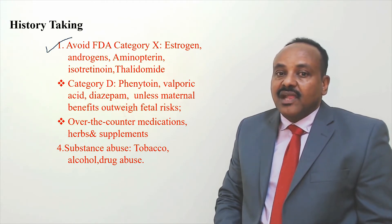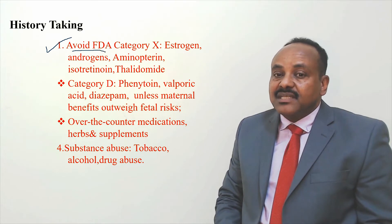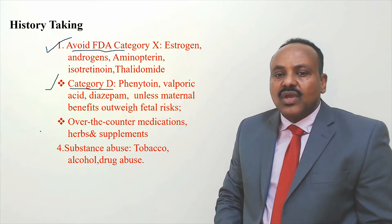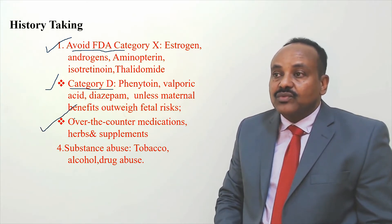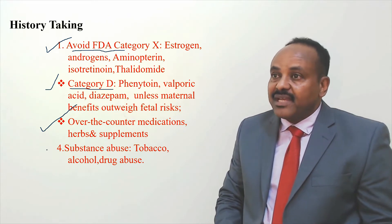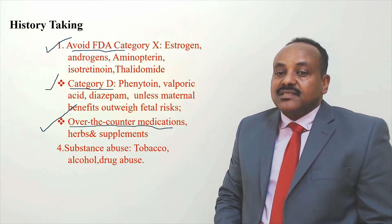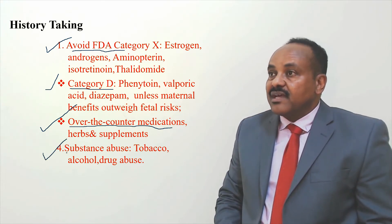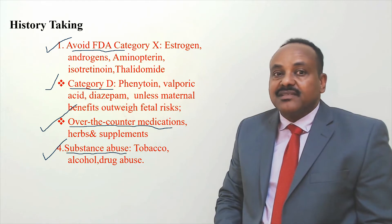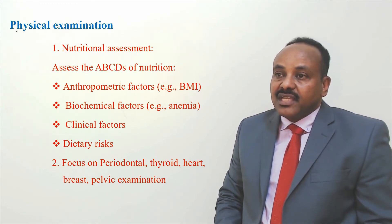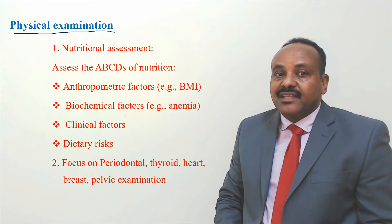We need to avoid some medications during pregnancy, like estrogen, thalidomide, and category D medications — unless the benefit outweighs the fetal risk. Some over-the-counter medications, herbs, and supplements also need to be evaluated for danger during pregnancy and during teratogenesis. We should also inquire about substance abuse: tobacco, alcohol, and drugs — all very dangerous in early pregnancy. After taking a thorough history and identifying all important points, we move to the next step: examination.